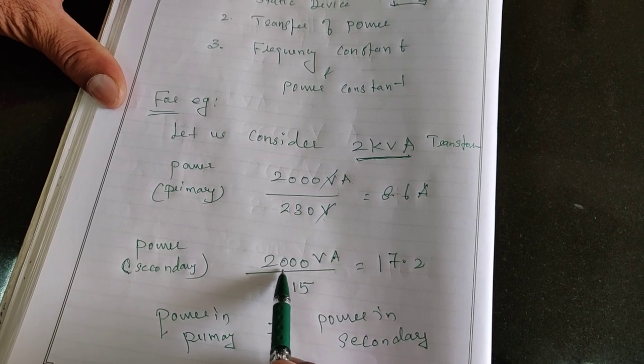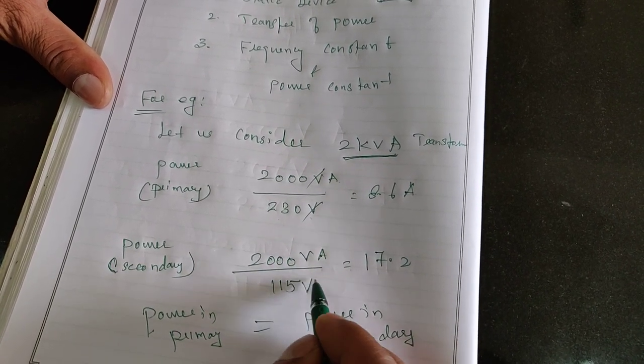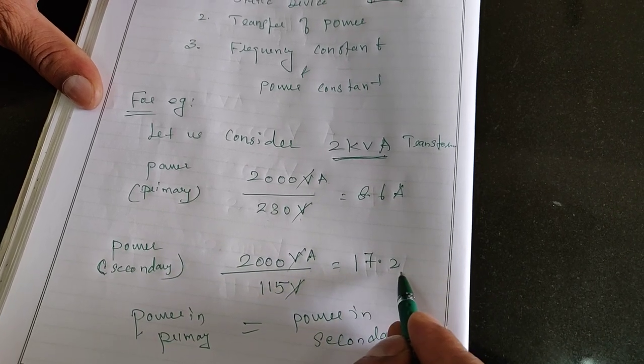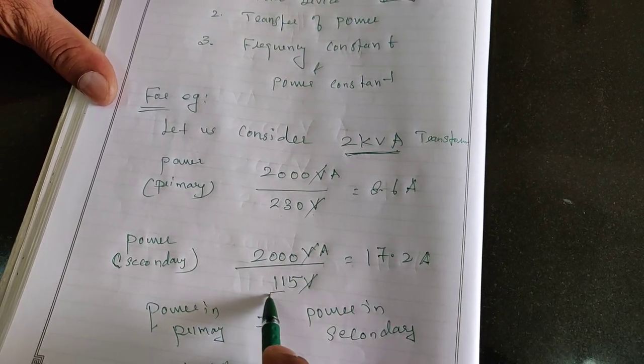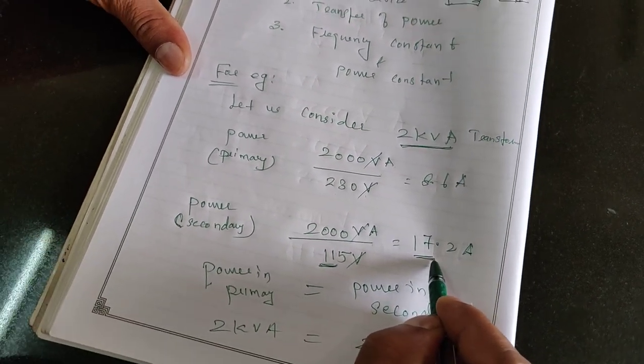Similarly, go to the secondary side. The same 2000 VA divided by 115 volt. Therefore, we will get 17.2 amperes. It means when we have the low voltage, there is the chance for giving more load.